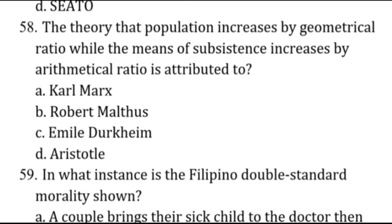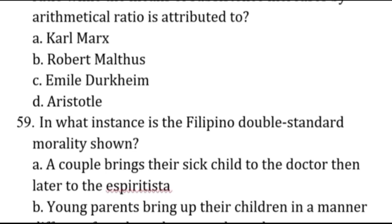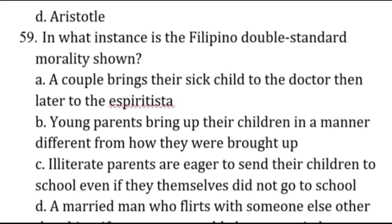The theory that population increases by geometrical ratio while the means of subsistence increases by arithmetical ratio is the Malthusian theory, attributed to Robert Malthus. That's letter B.